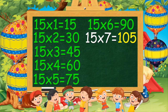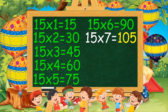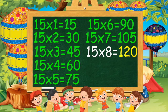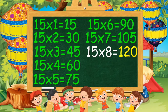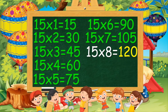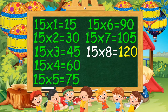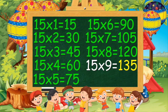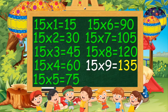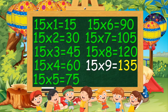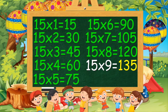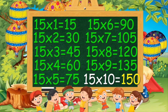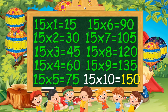15 sevens are 105. 15 eights are 120. 15 nines are 135. 15 tens are 150.